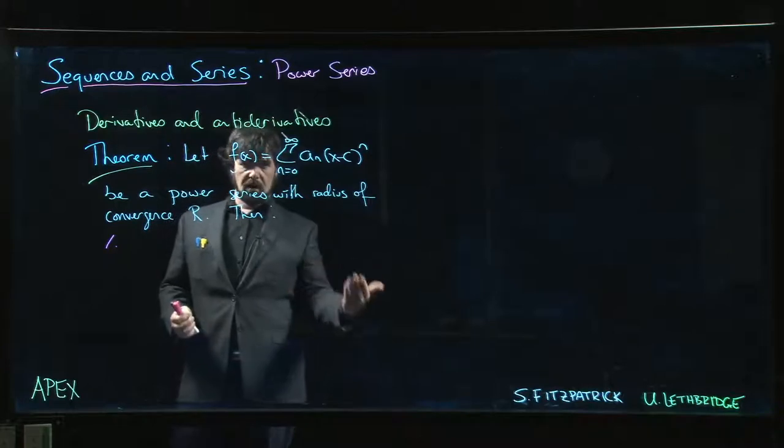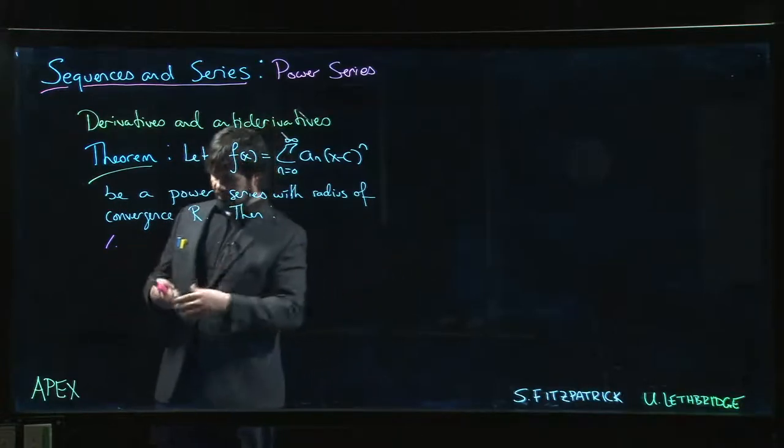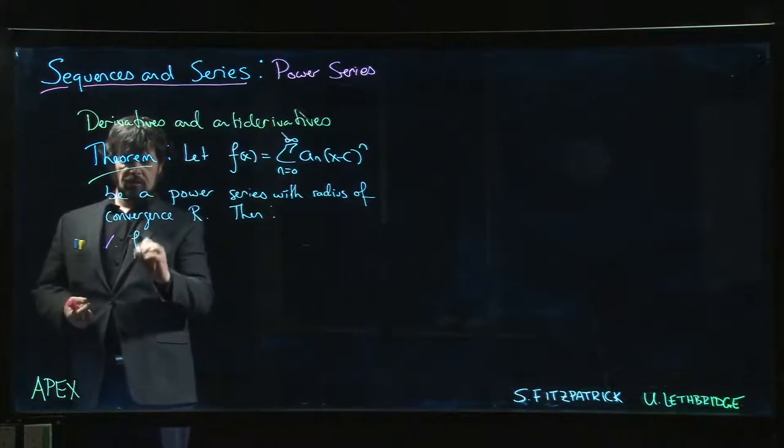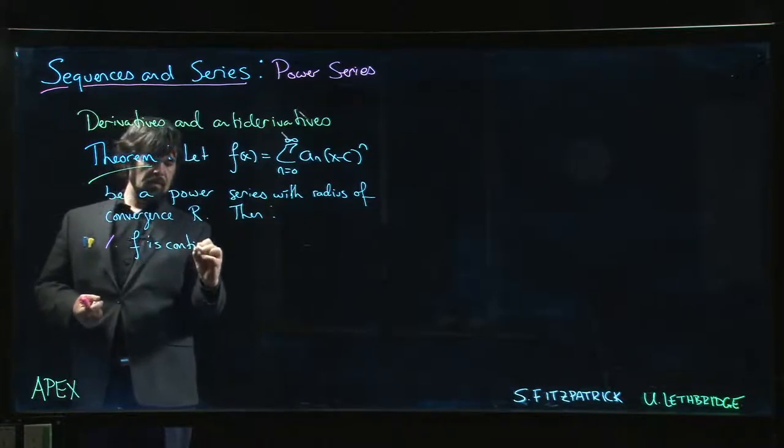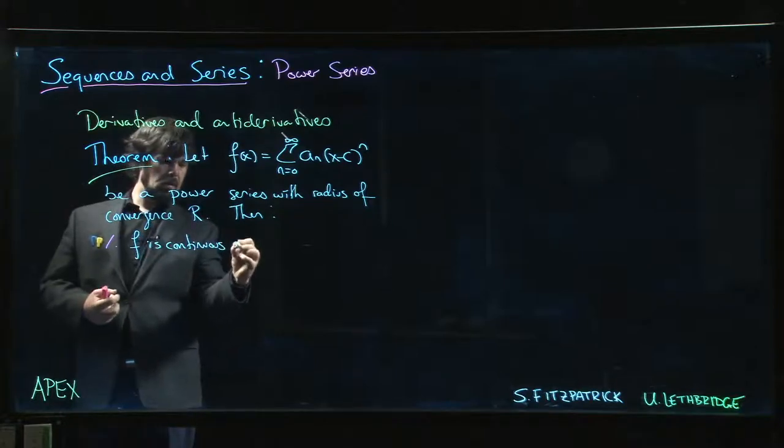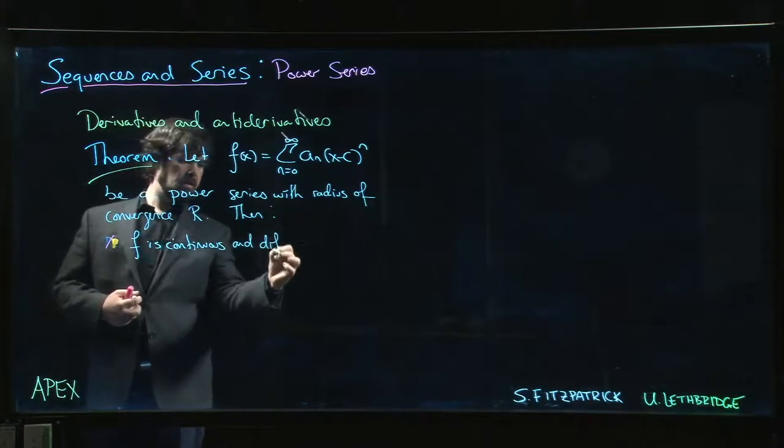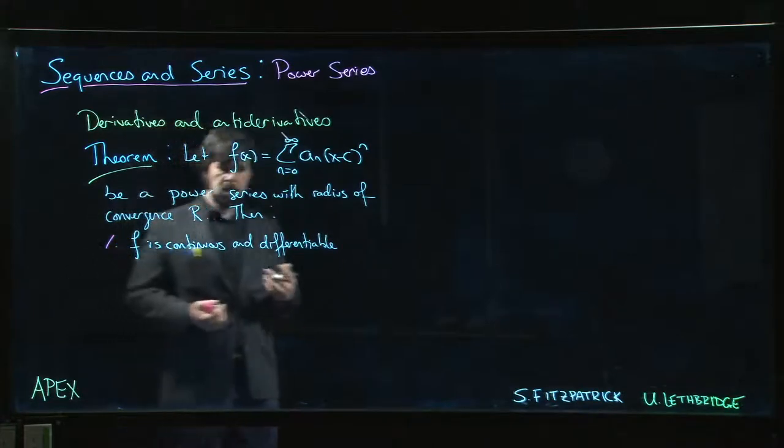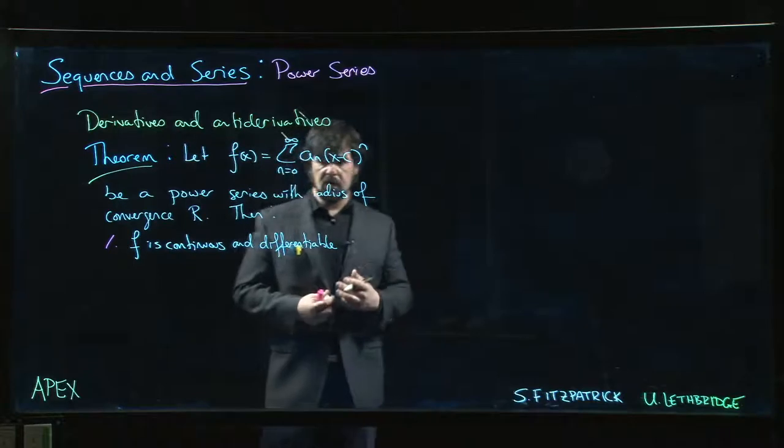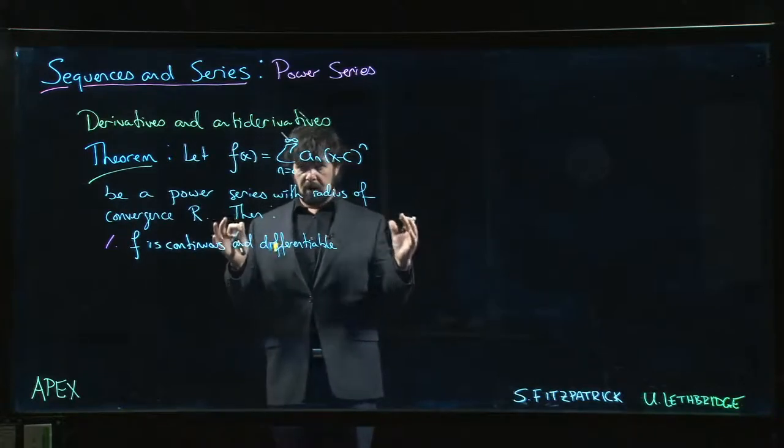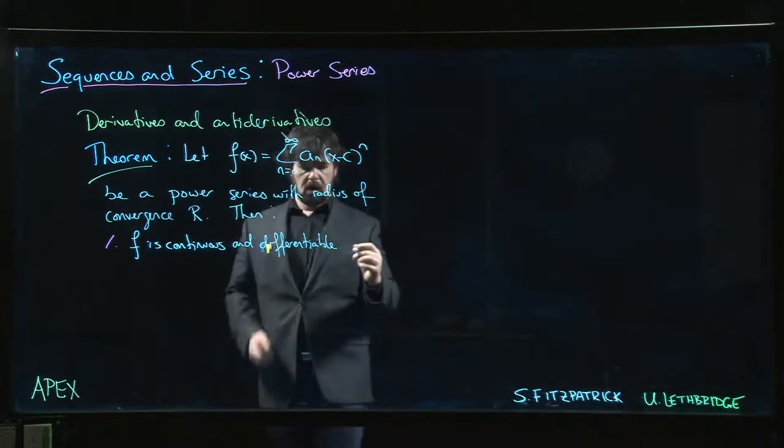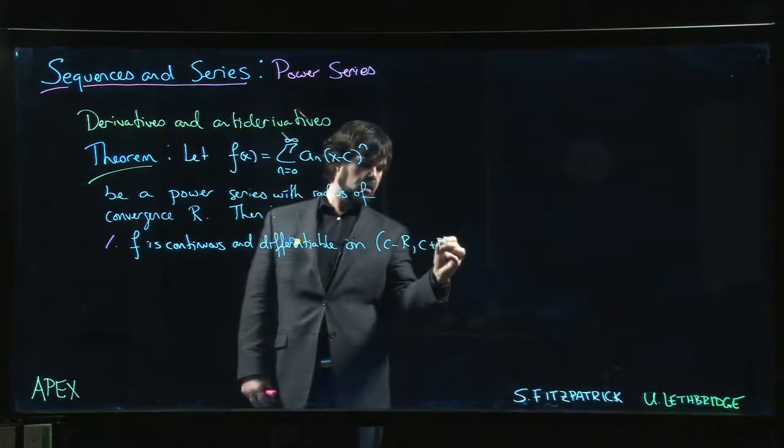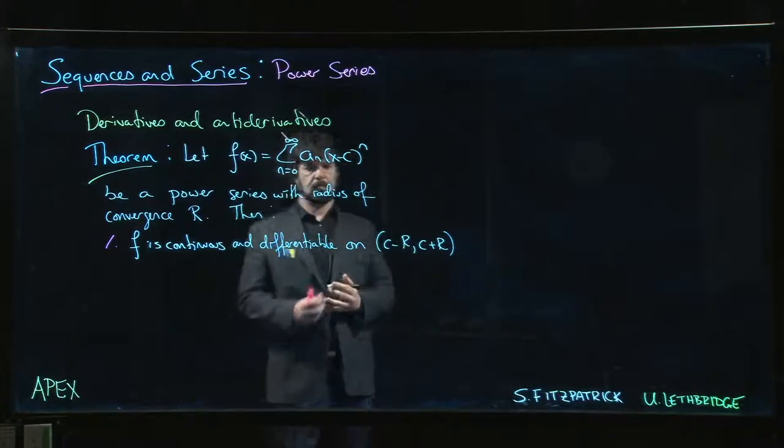So we've got a function with a domain. Now we can start talking about things like limits, continuity, derivatives, antiderivatives. So the first one says that this function f is continuous and differentiable, maybe not on the whole interval of convergence because we're not going to say anything about endpoints which may or may not be included, but certainly on the open interval from c minus r to c plus r.